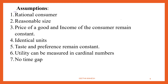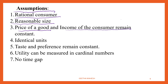Let us discuss a few assumptions of the law of diminishing marginal utility. The first is rational consumer — a consumer who is able to calculate the utility he can derive when consuming a commodity. The second is reasonable size — when conducting the experiment, the unit of consumption must be a reasonable size. For example, if you take an apple, you must consider one complete apple, not pieces of an apple. The third is that the price of the good and income of the consumer should remain constant.